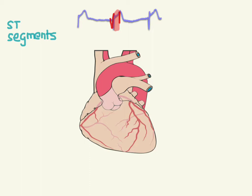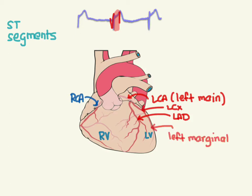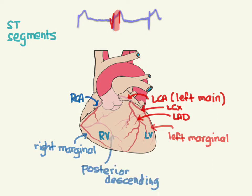First we should look at the different areas of the heart and the blood vessels. So we have the right ventricle, left ventricle, right coronary artery, and left coronary artery. This is also called the left main, since this is the main trunk of the left side that comes off before it splits into the left anterior descending and the left circumflex. This one's called the left marginal, and this one is called the right marginal. And then finally, this one here in back is called the posterior descending.